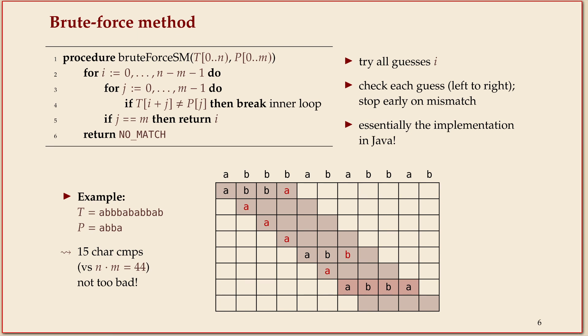So what the algorithm would do is it starts looking here. Let me do this a bit slow. So we try to align the pattern with this. We would do checks: a to a matches, b and b matches, b and b matches, but here we have a mismatch. That means we drop out of this inner loop before we reach j equals m. No match found.